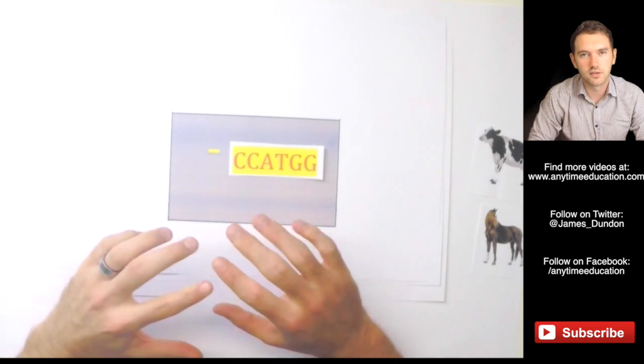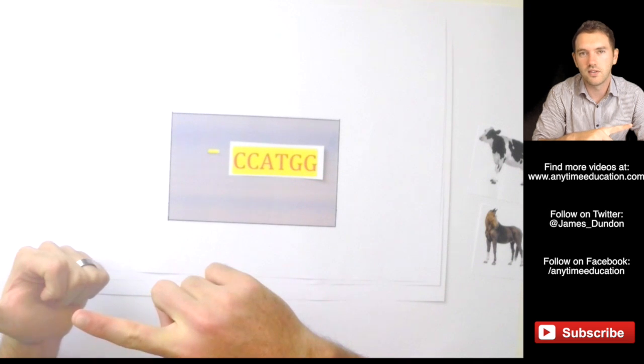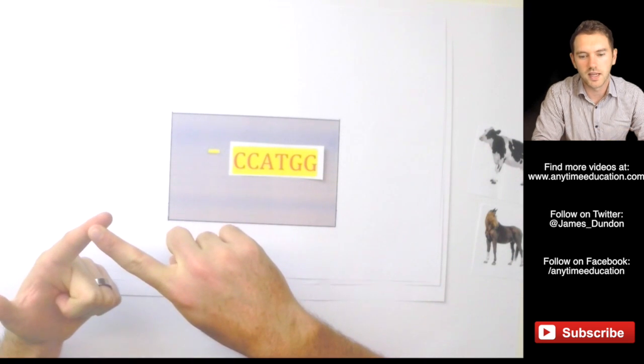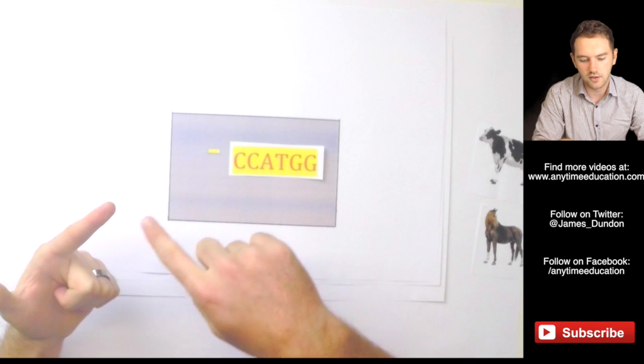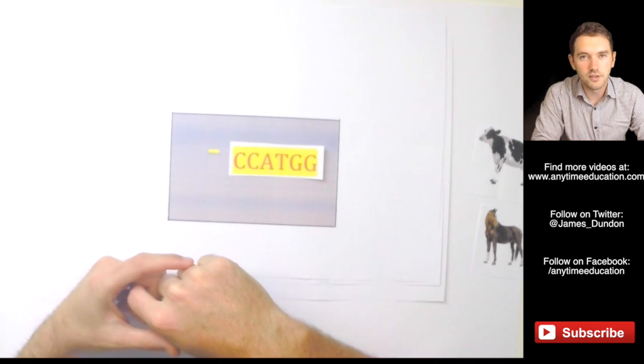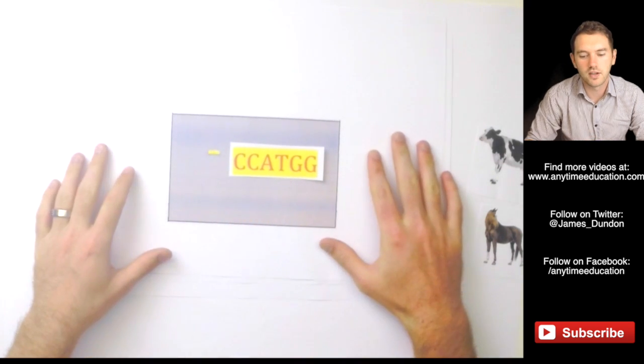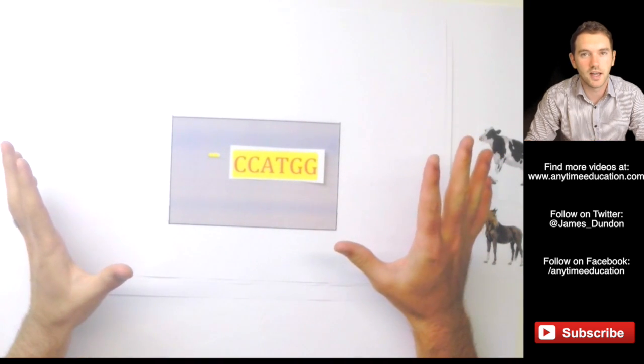So DNA probes, extremely helpful if we already know the sequence. We want to see if that sequence exists in our sample and we want to be able to easily identify it using our gel electrophoresis process. Hopefully that was helpful. If it was, give the video a thumbs up, subscribe to my channel and post in the comments section any other questions that you might have.